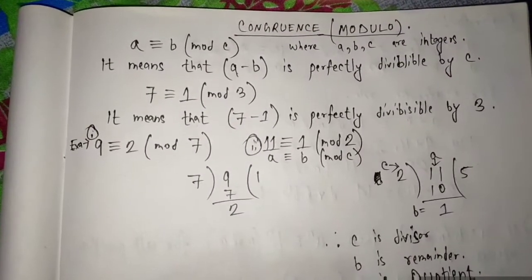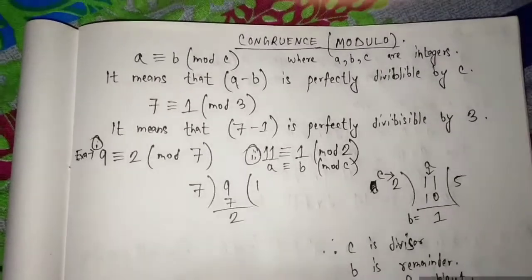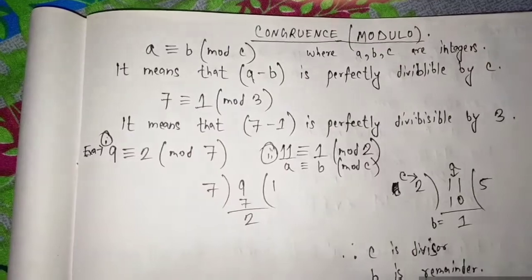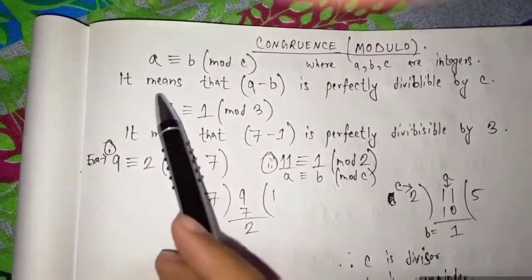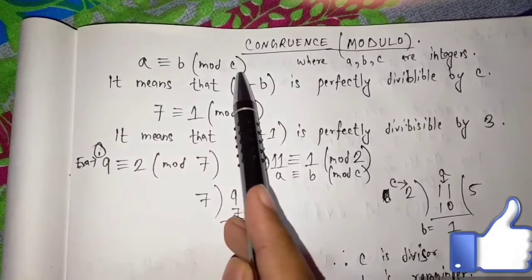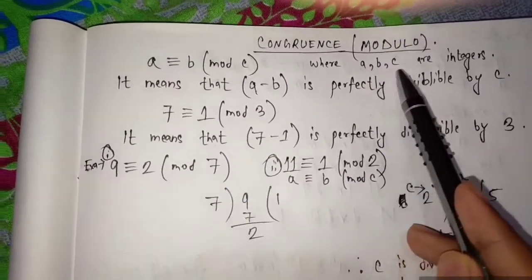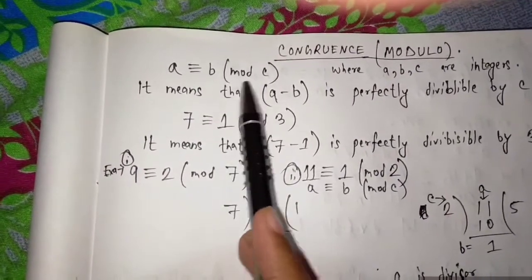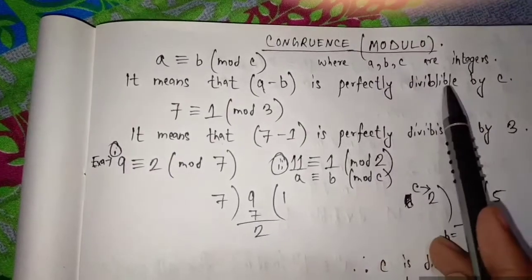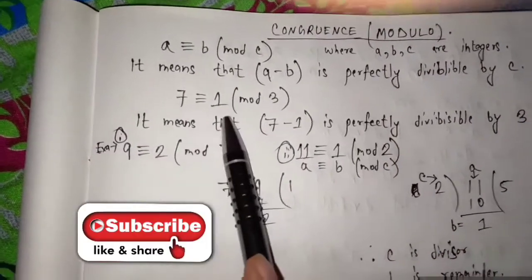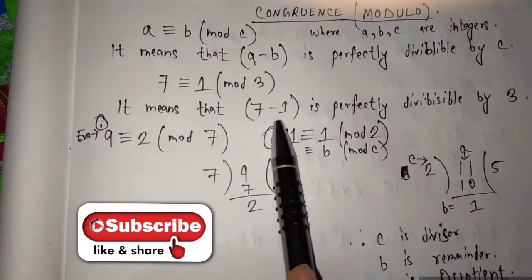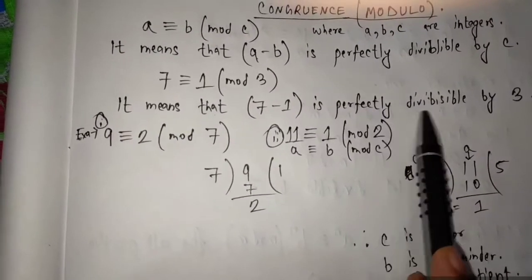Hello guys, welcome to Ad Education. Today we are going to learn about the chapter congruency, which is also known as modulo. We always say that A congruent B mod C. Here A, B, C are integers, and it means that A minus B is perfectly divided by C. For example, 7 congruent 1 mod 3 means that 7 minus 1 is perfectly divisible by 3.